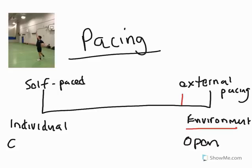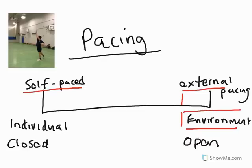A self-paced skill tends to be a closed skill, so we can link those continua together. In a self-paced skill, not only does the performer decide when the movement begins, but they decide the timing and rate of the movement. Whereas in an externally paced skill, the start and timing of the movement are dictated by the environment.